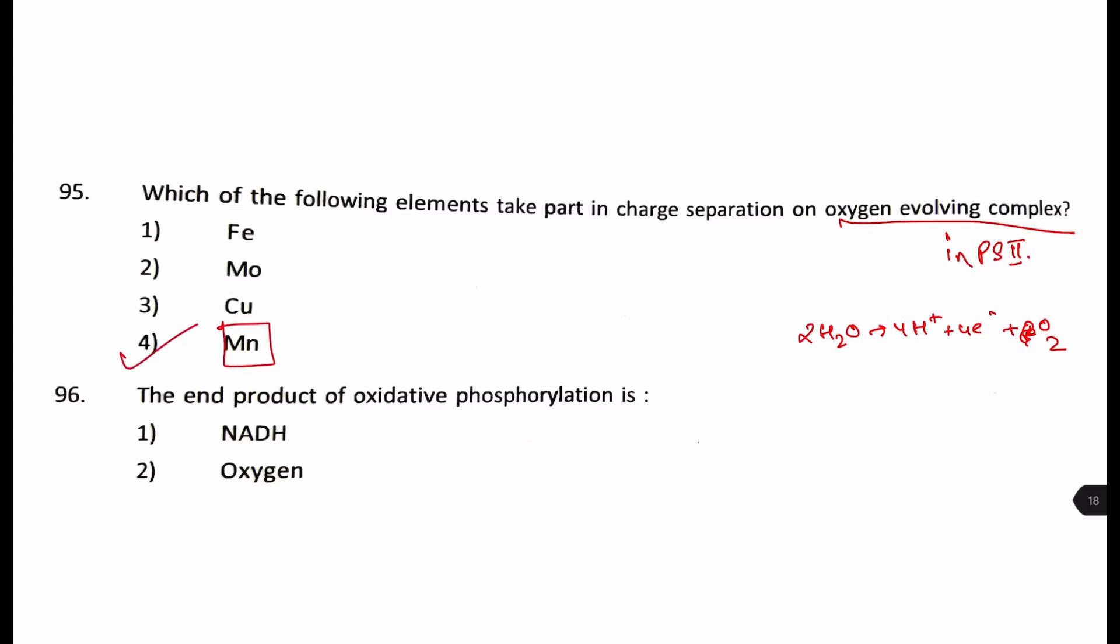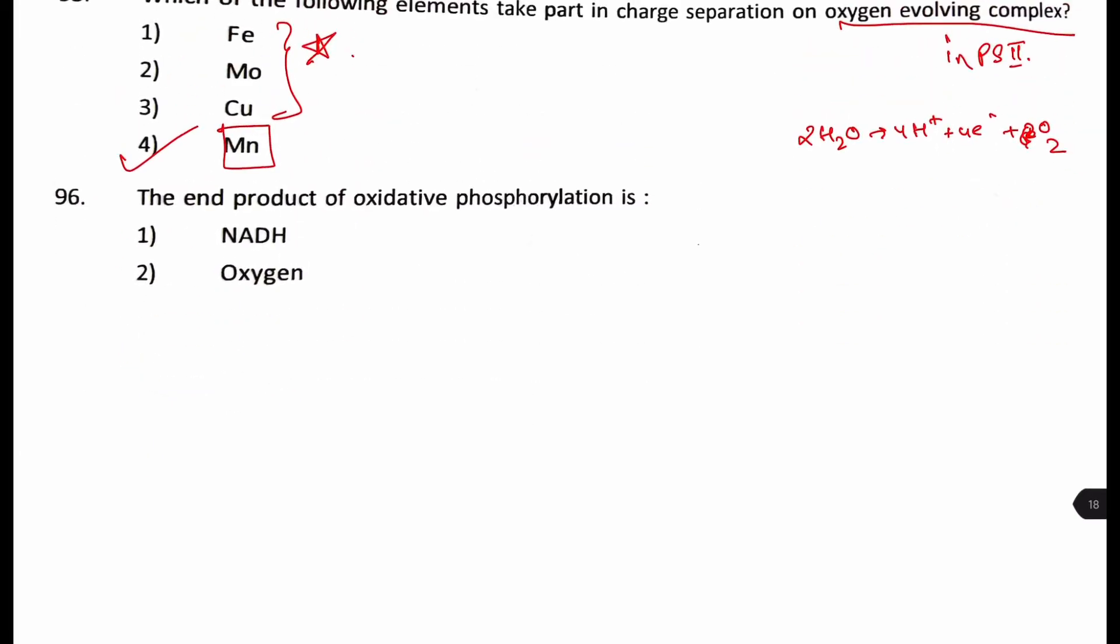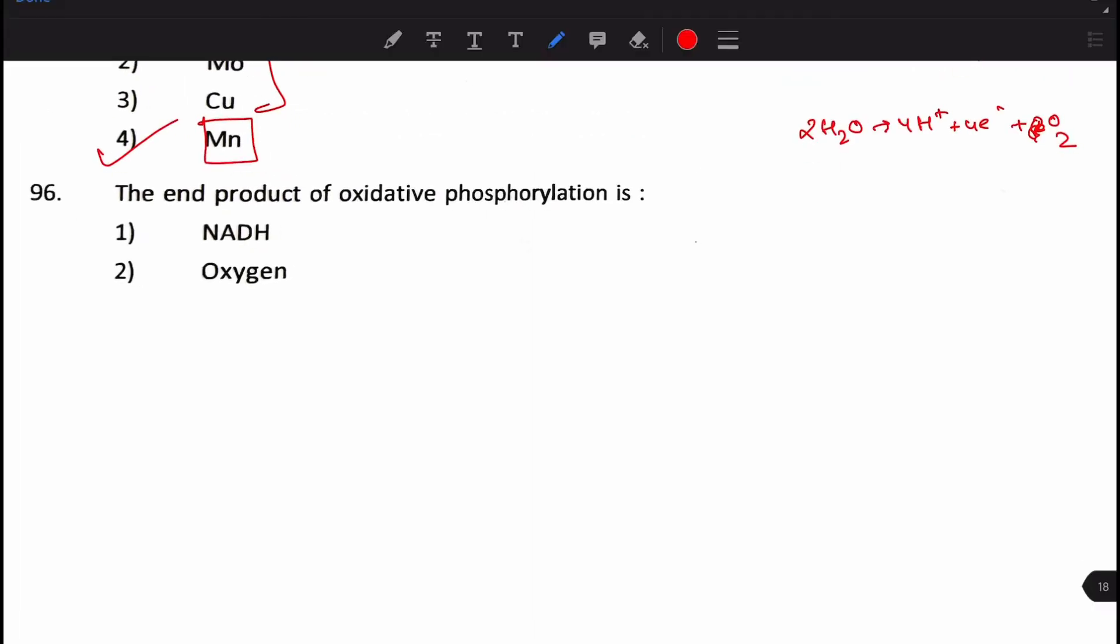So, from these 4 options, iron, molybdenum, copper, and manganese, our answer will be manganese. But, we should also be aware of the cofactors of iron, molybdenum, and copper and where they are used.